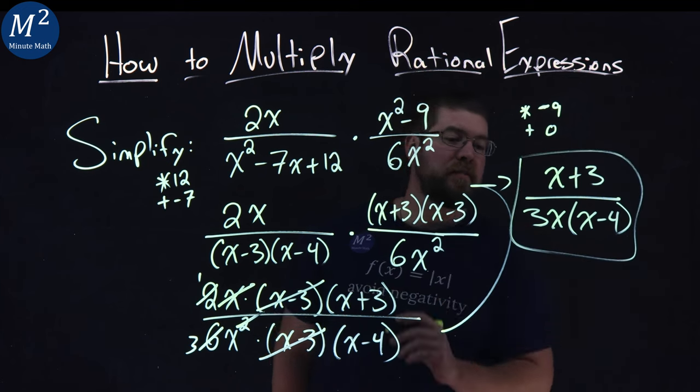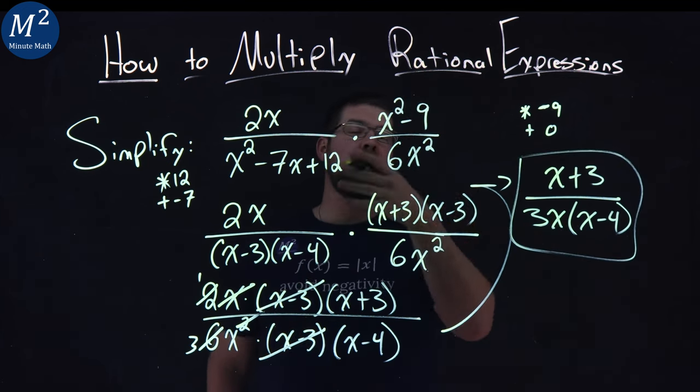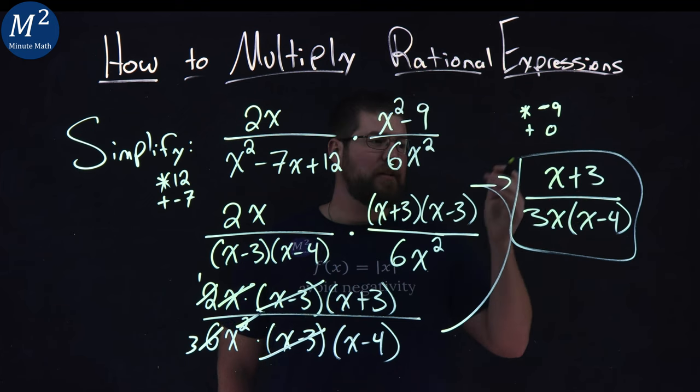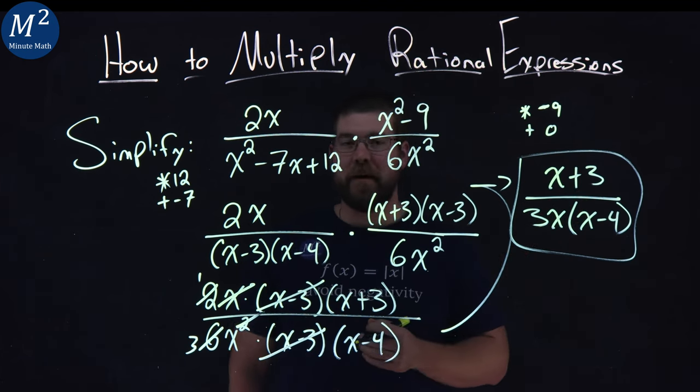And there we have it. There's nothing else I really can do to simplify this, and so, after all that work, our final answer is an x plus 3 over 3x times an x minus 4.